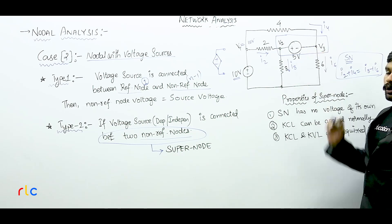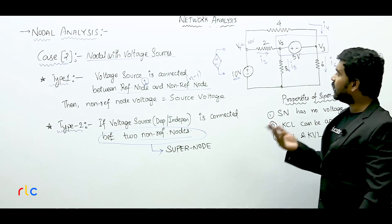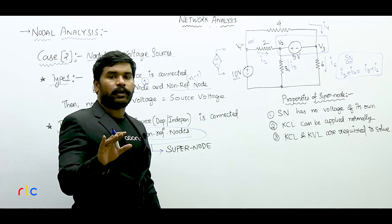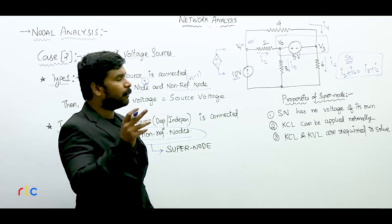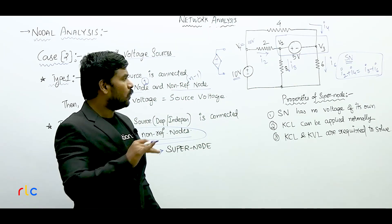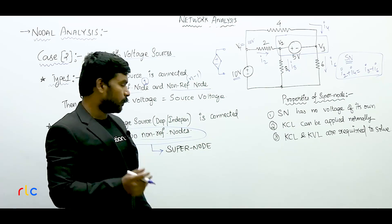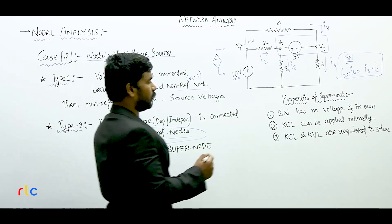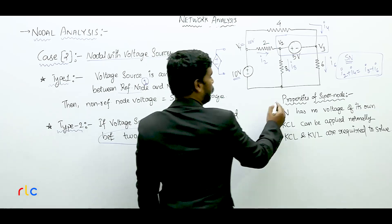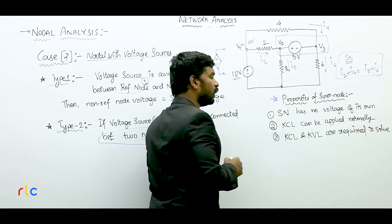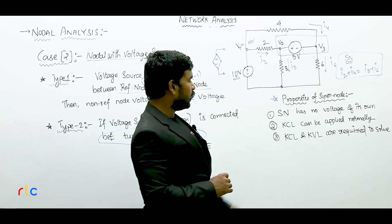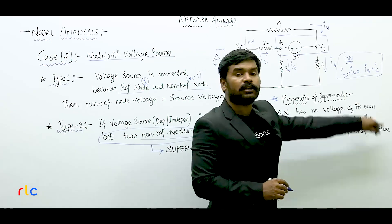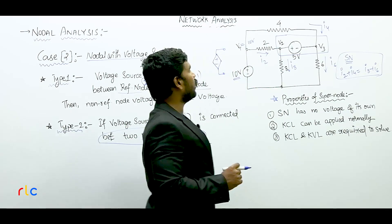So this is a super node. We will find out voltage equations. But this super node has some special properties. If we do a super node in a network, we have properties. The super node has no voltage of its own. For example, here is node number 1. What is node 1 voltage? Node 1 is 10 volts. That is a super node.